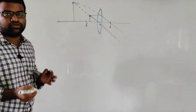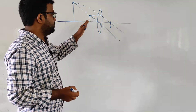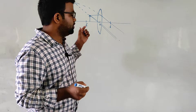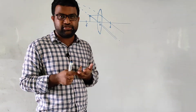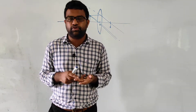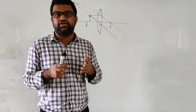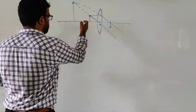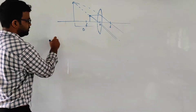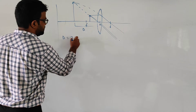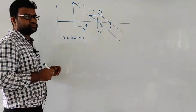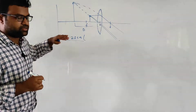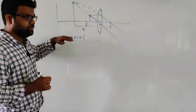If we keep the object on f, the image will be produced at infinity. We will calculate the magnification for both cases. First, we calculate magnification at the near point, which is at a distance of 25 centimeters — the minimum distance for clear vision. When the image is produced at distance D (25 cm), that is your v.